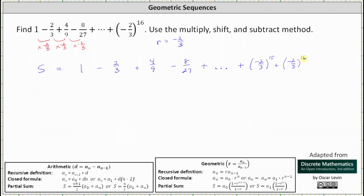The next step is to form a second equation by multiplying both sides of this equation by the value of r, which is negative 2/3. So on the left we have negative 2/3 s equals. When writing the terms on the right, we shift them to the right. The first product is negative 2/3 times 1, which is negative 2/3.